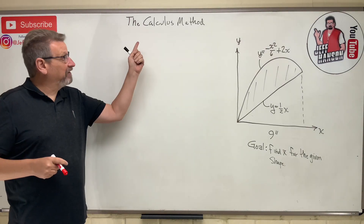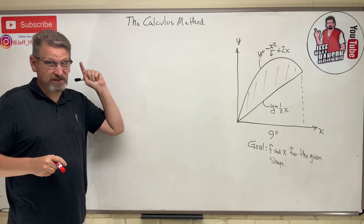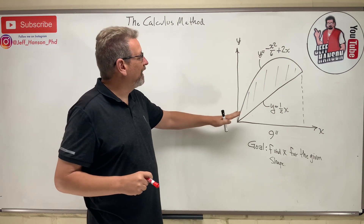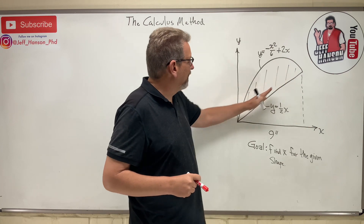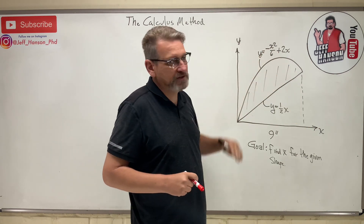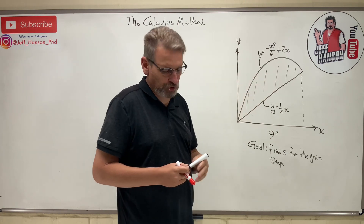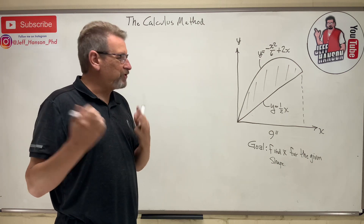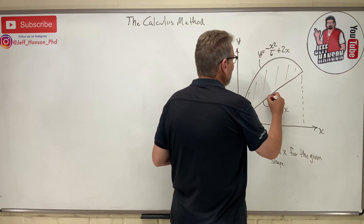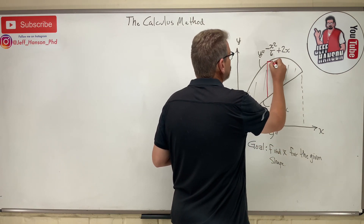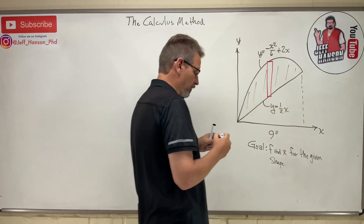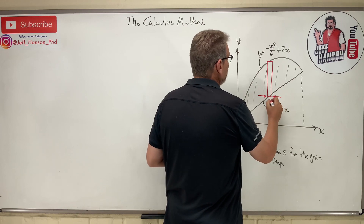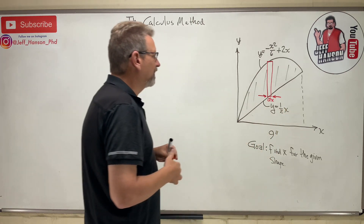Hey gang, coming at you again with a quick video on the centroid by calculus method. We're asked to find x-bar for a given shape — we have a straight slope and a parabolic curve on top, and we need to find the centroid of that shaded shape. Always when you do this, I suggest you draw yourself a little demonstrator strip, just to remind yourself what we're talking about — a little strip that is dx wide.